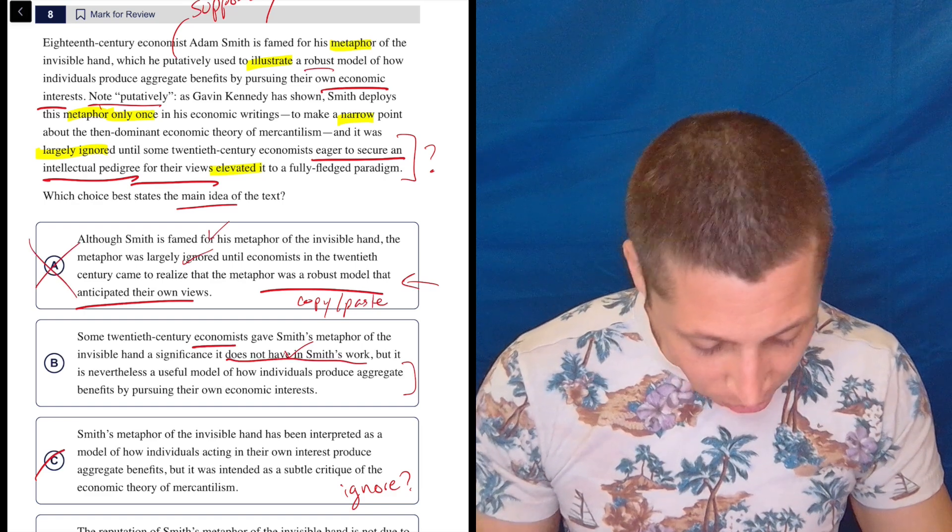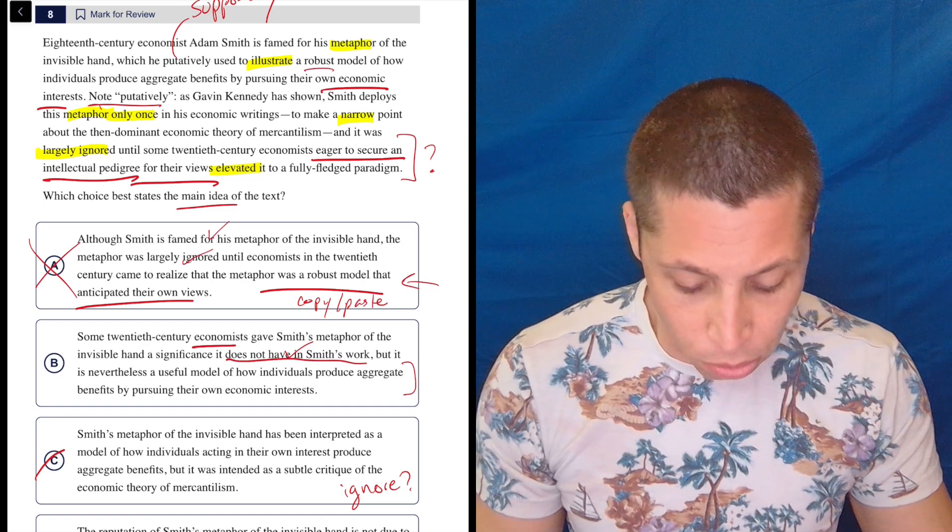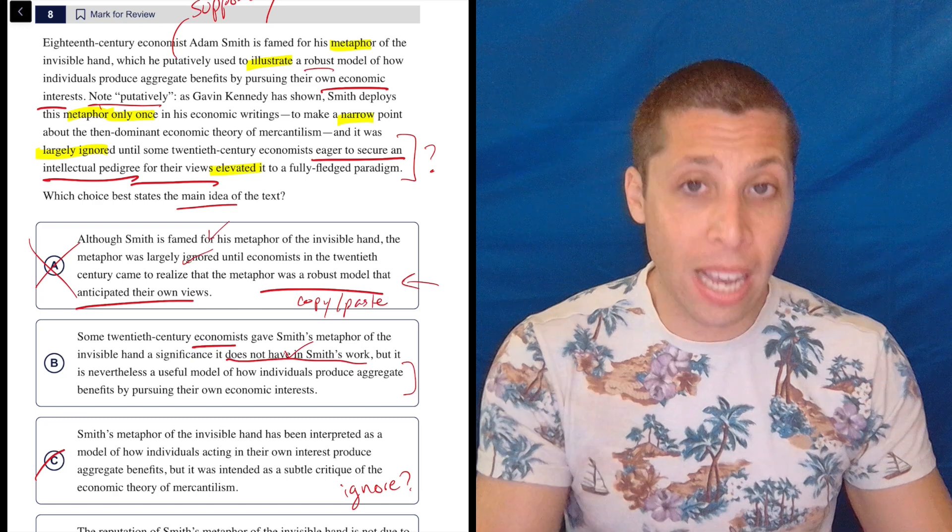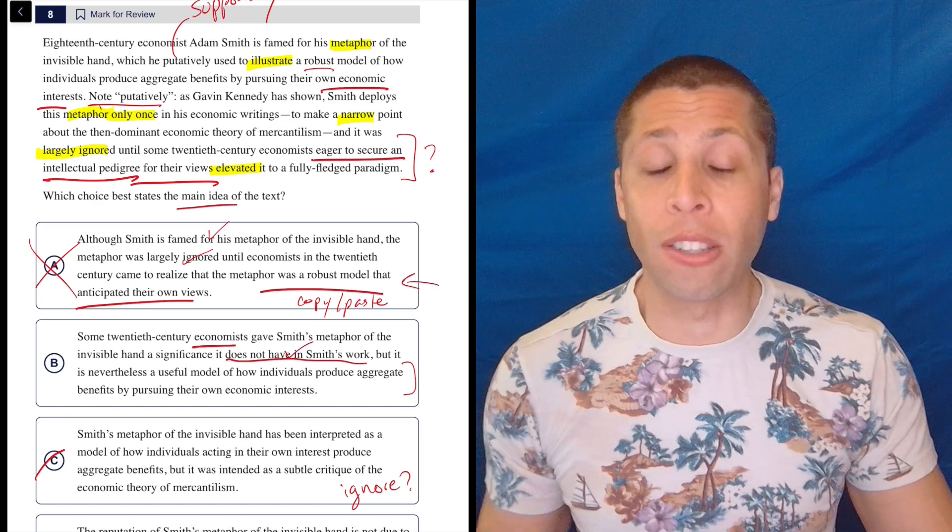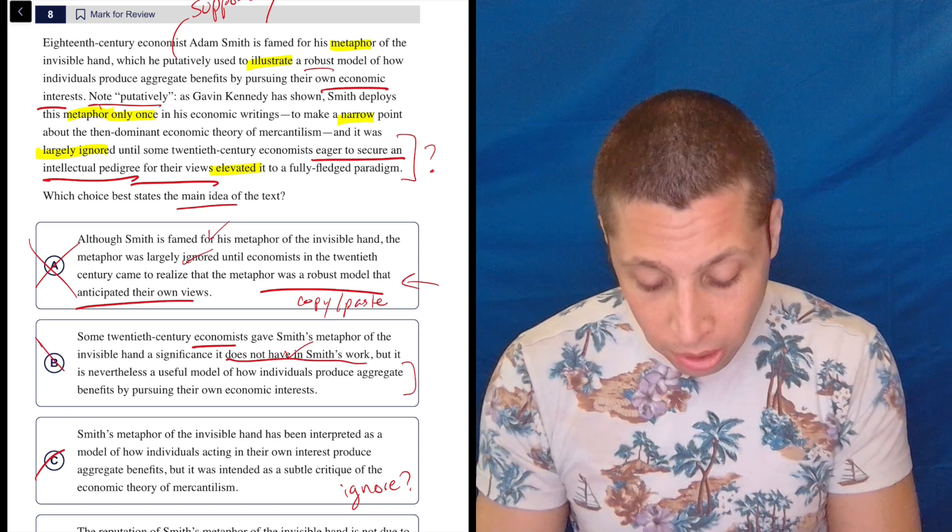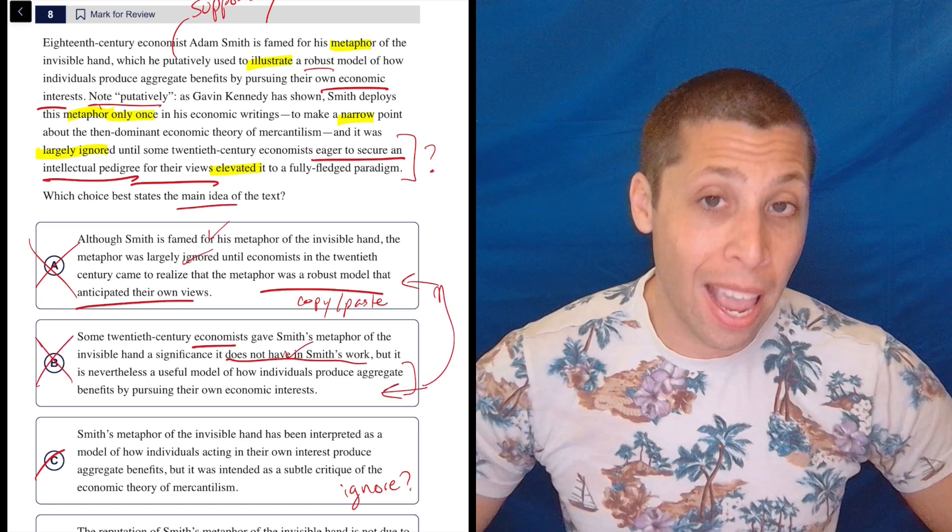B, some 20th century economists, we got all that part, but it is nevertheless a useful model of how individuals produce aggregate benefits by pursuing their own economic interests. No, again, the passage says it was not for that reason. It's only now that we say that it was actually for mercantilism. So it has a completely different usage. So this is actually wrong kind of at the end here for the same reason that A was wrong.